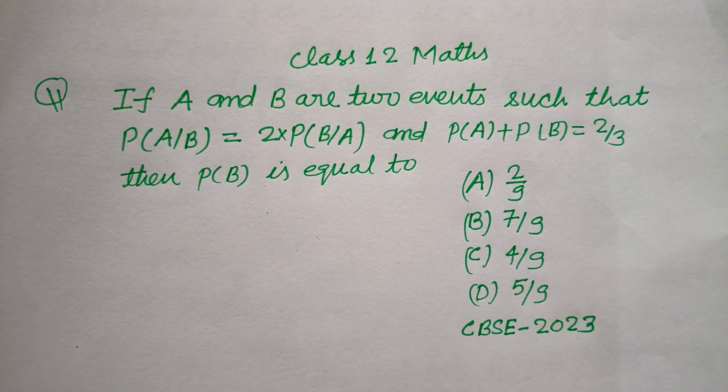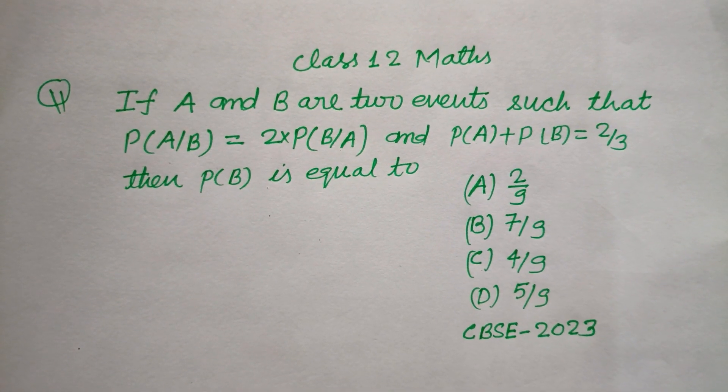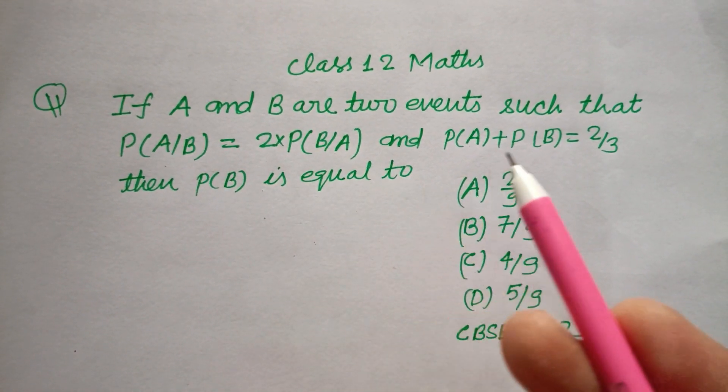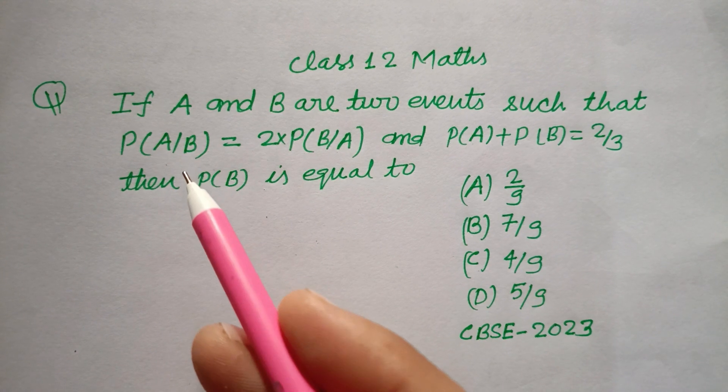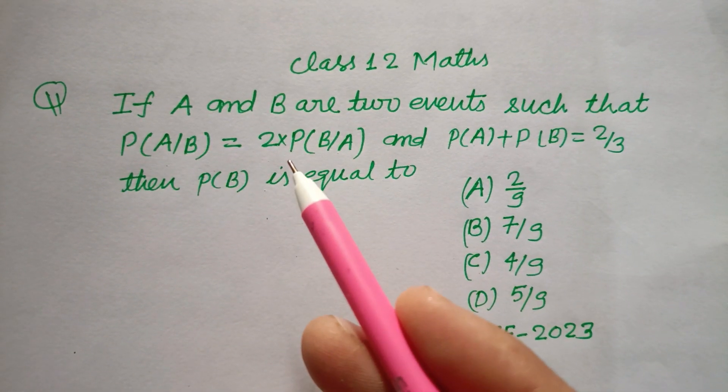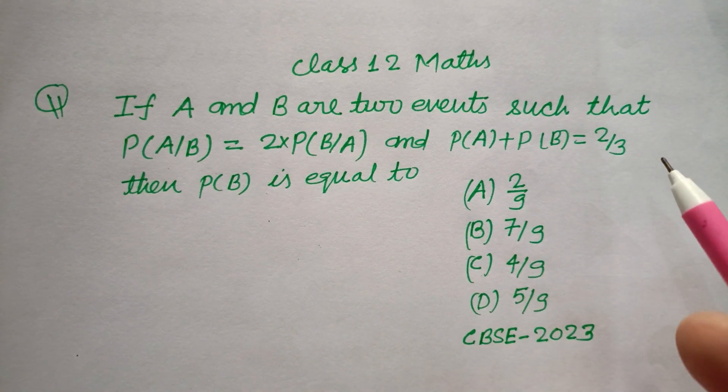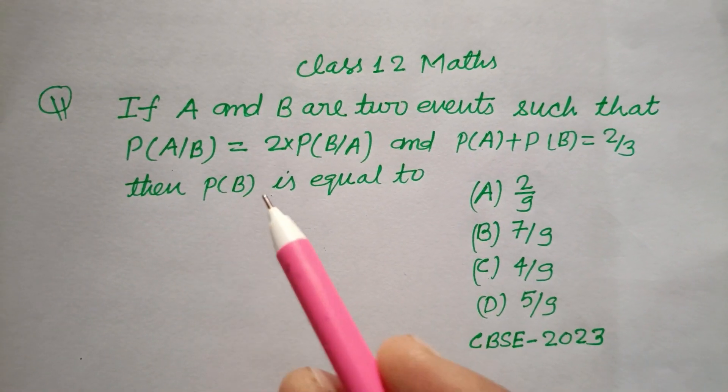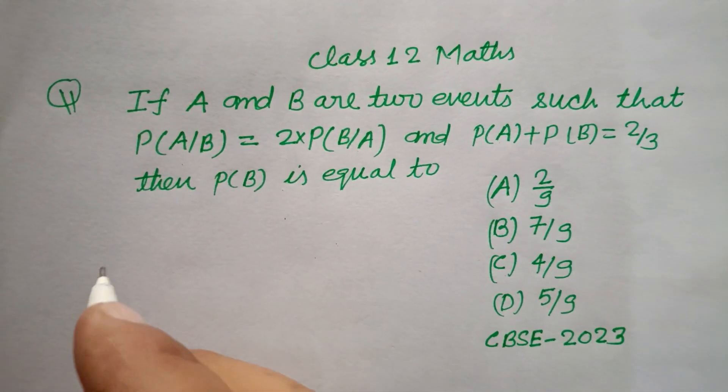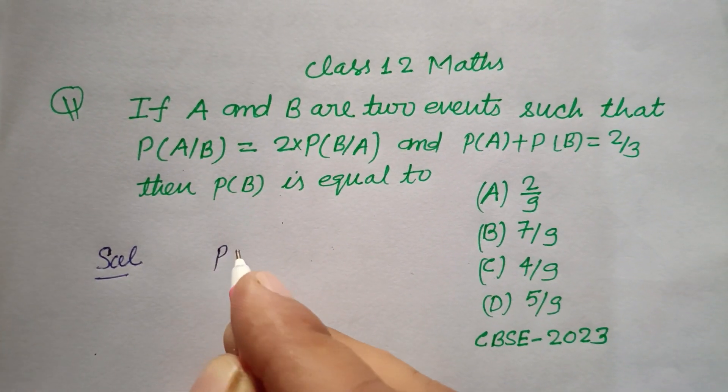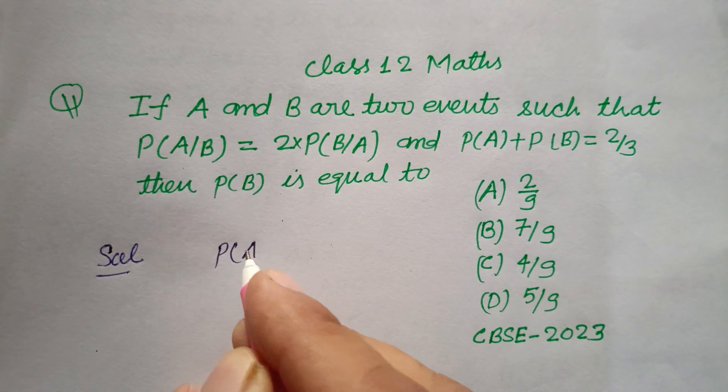Hello viewers, warm welcome to this YouTube channel. Question from CBSE Board 2023 exam: If A and B are two events such that P(A|B) = 2×P(B|A) and P(A) + P(B) = 2/3, then P(B) is equal to?